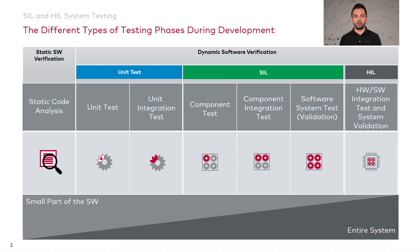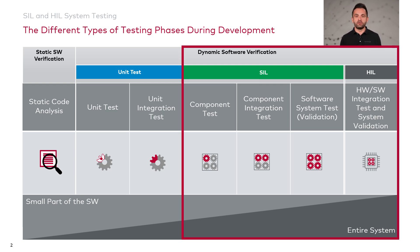At Vector, we provide tools for many different development steps of embedded systems, ranging from PCLint Plus for static code analysis and VectorCast for unit and integration testing, to Kanu for system level tests. For the system test stage, Kanu can either be used for the software system test in a virtual environment or the system test of the final hardware device. These two approaches are called Software in the Loop and Hardware in the Loop, or SIL and HIL for short.